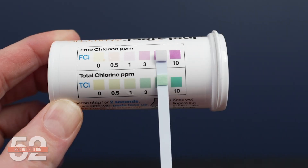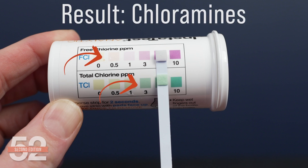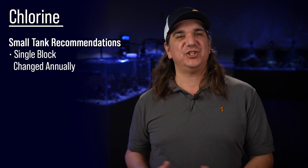However, if the test strip reads a significant amount of total chlorine but much less — near zero — free chlorine, that means you have chloramines. The explanation is that everything in that total that isn't free is chloramines. Knowing what your water is treated with allows you to optimize the filtration strategy. For half of us with simple chlorine, a single standard block changed out annually is often adequate.